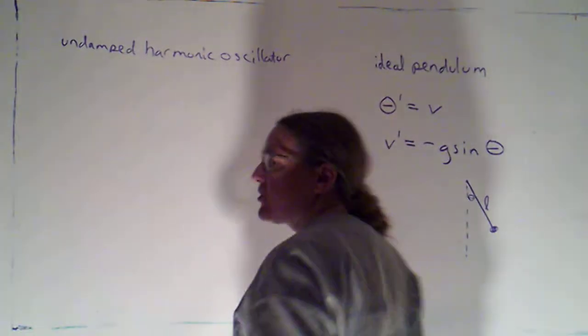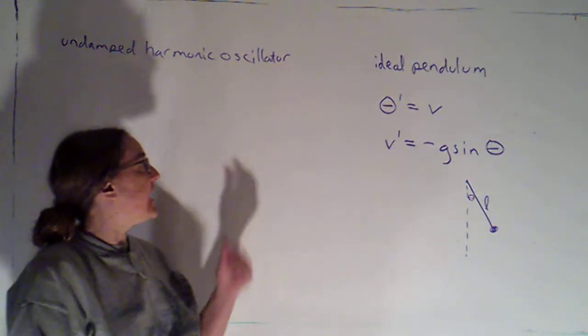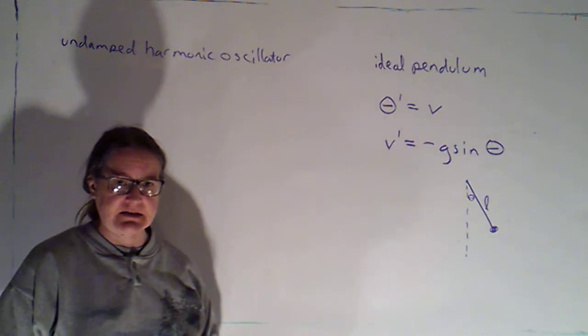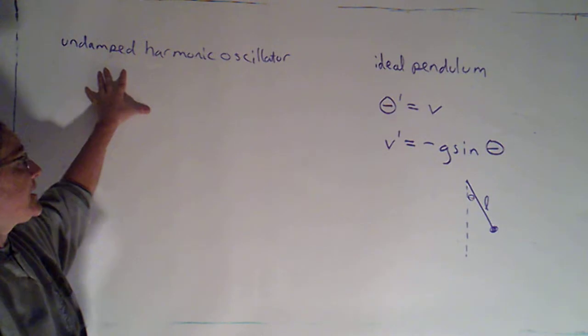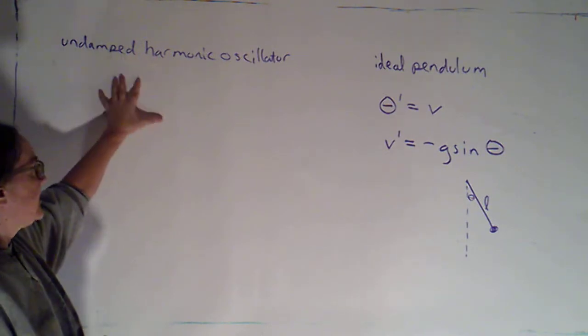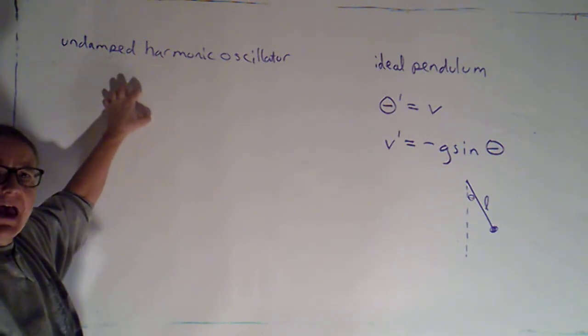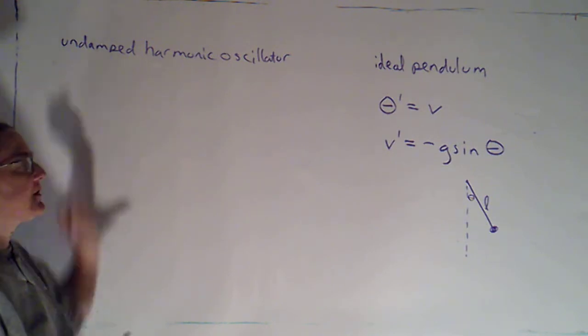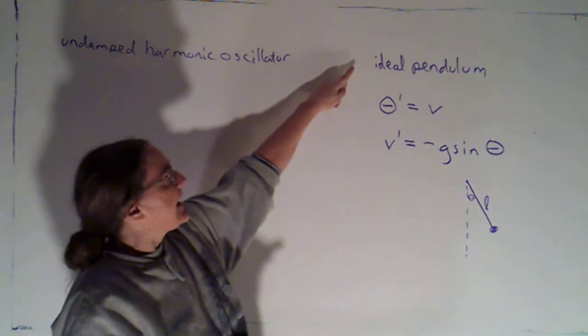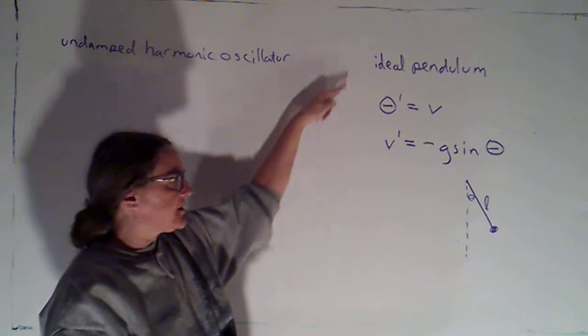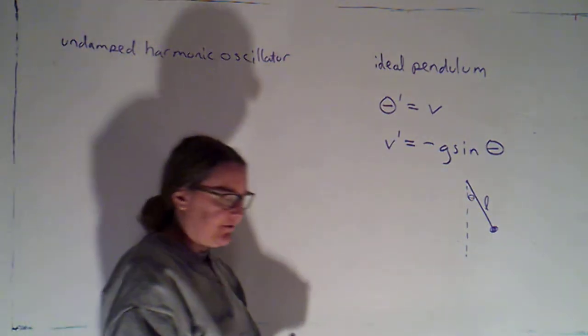I just wanted to take a look at two more scenarios that lead to Hamiltonian systems. One is an undamped harmonic oscillator. I'm going to take a look at that in a moment because we've looked at that pretty thoroughly already, but not in this particular context. The other is an ideal pendulum.